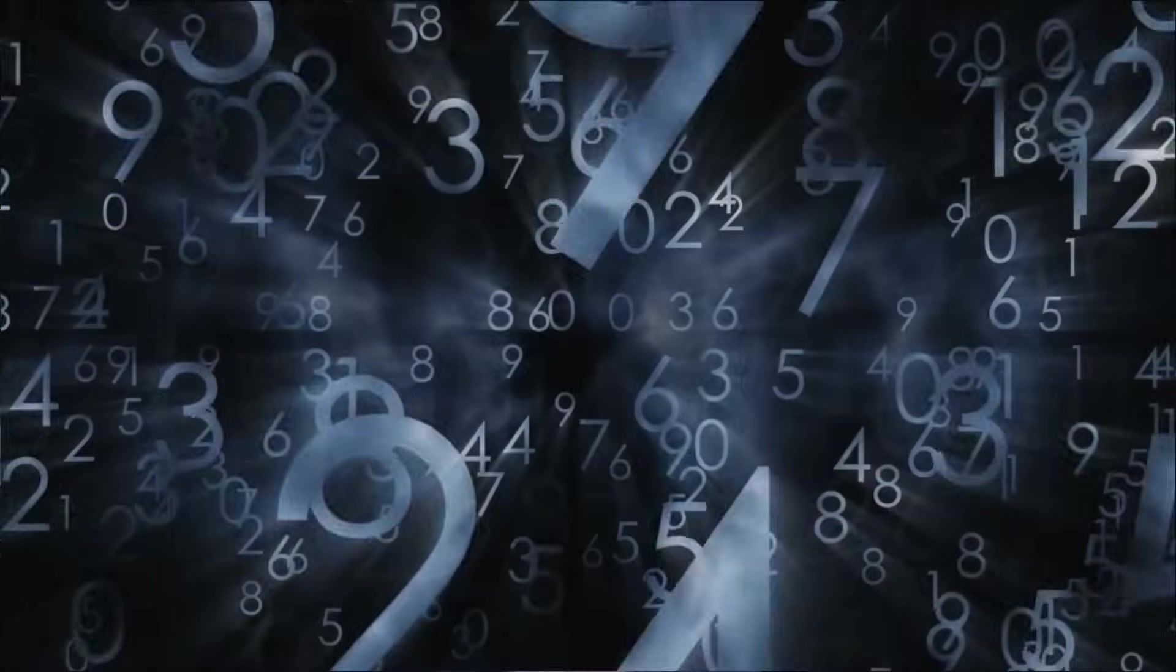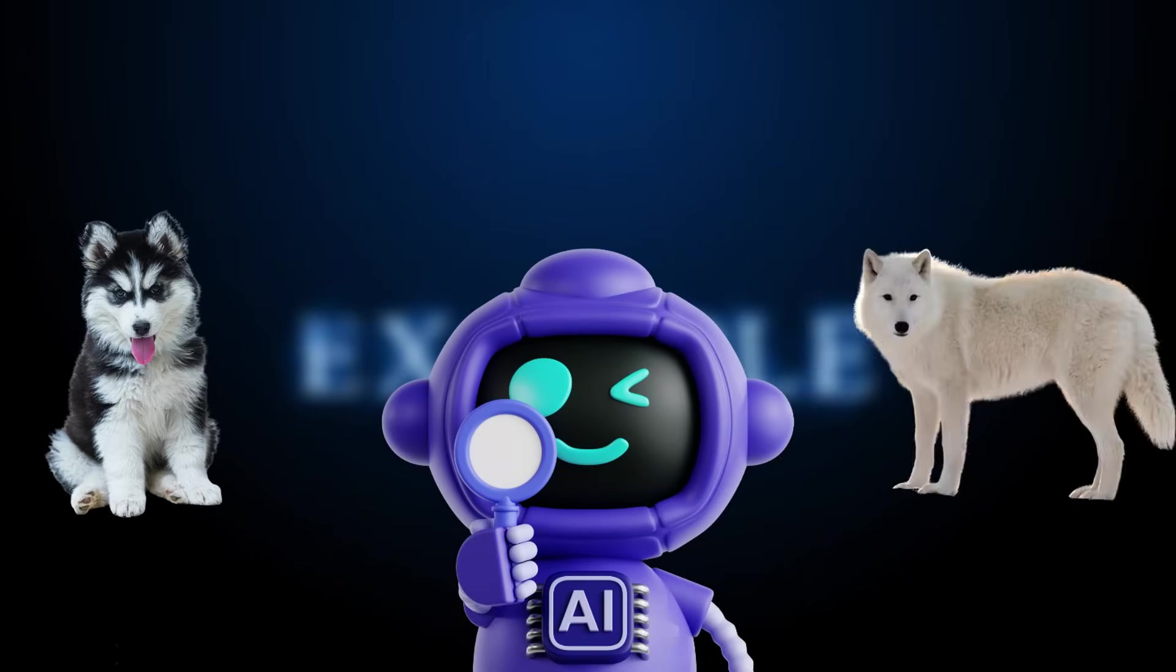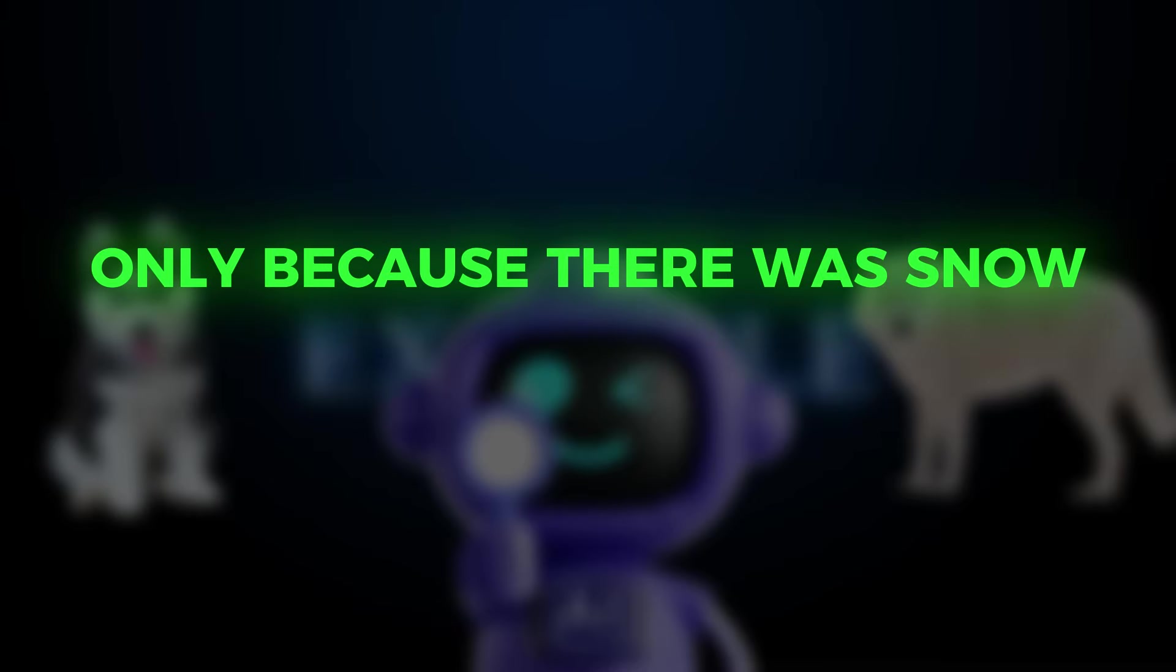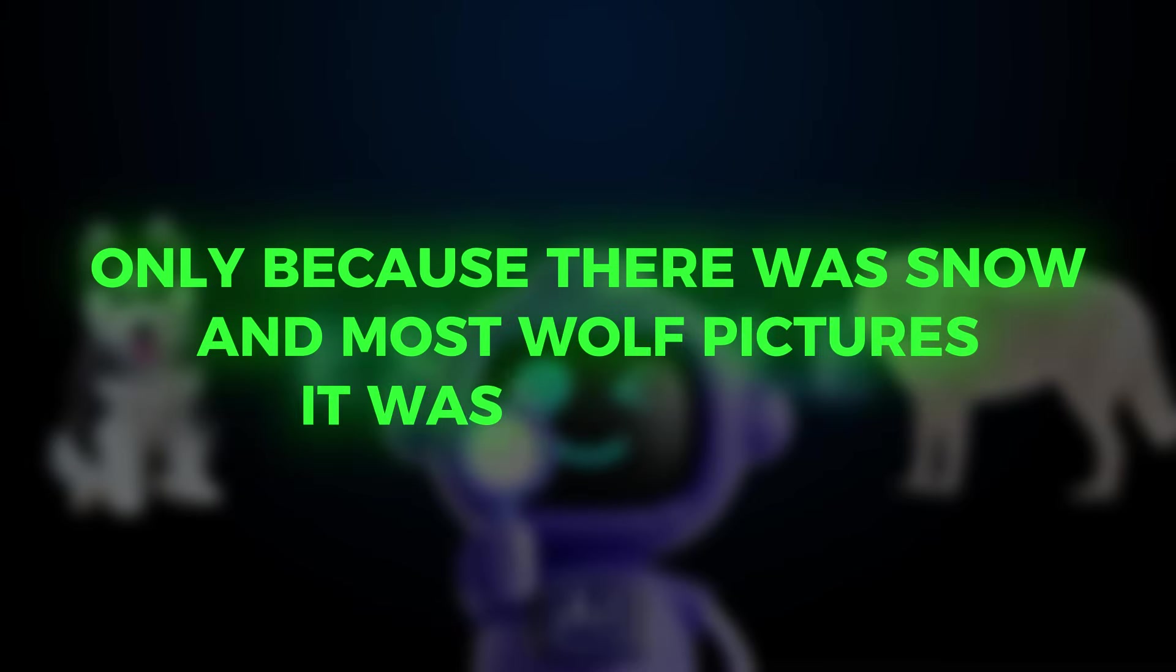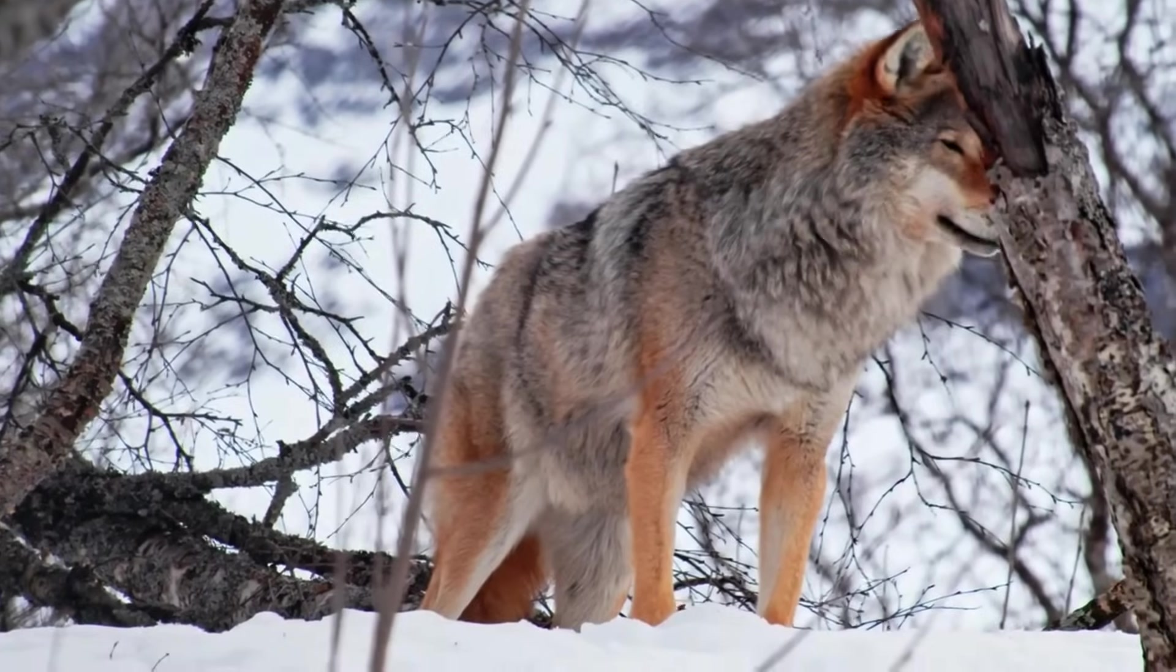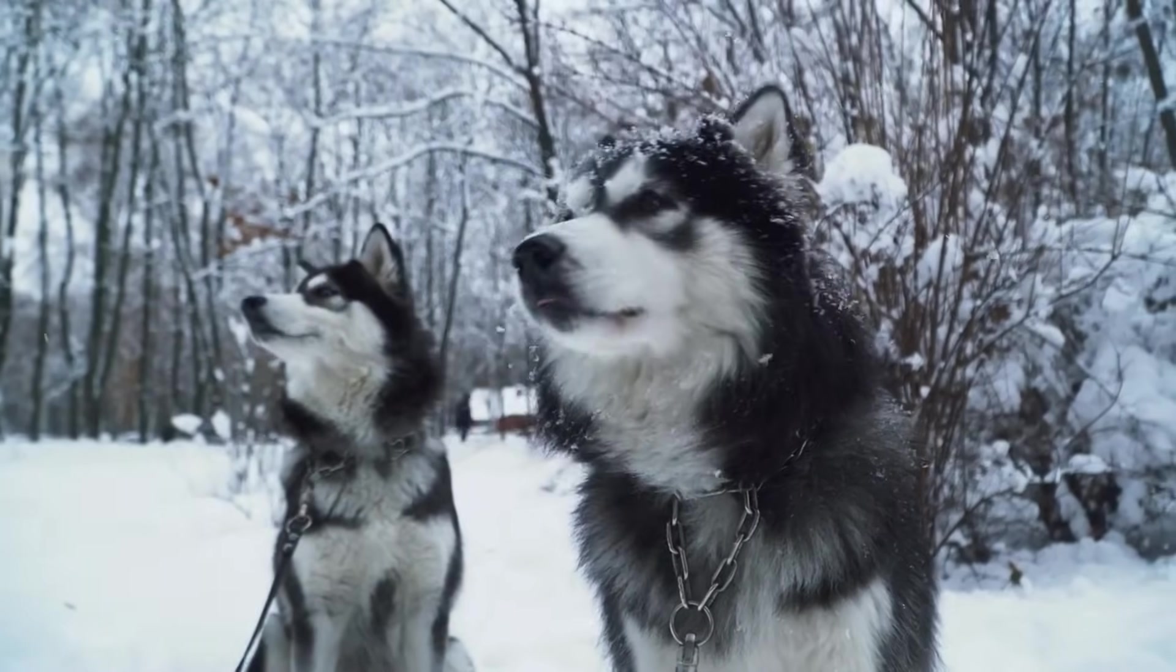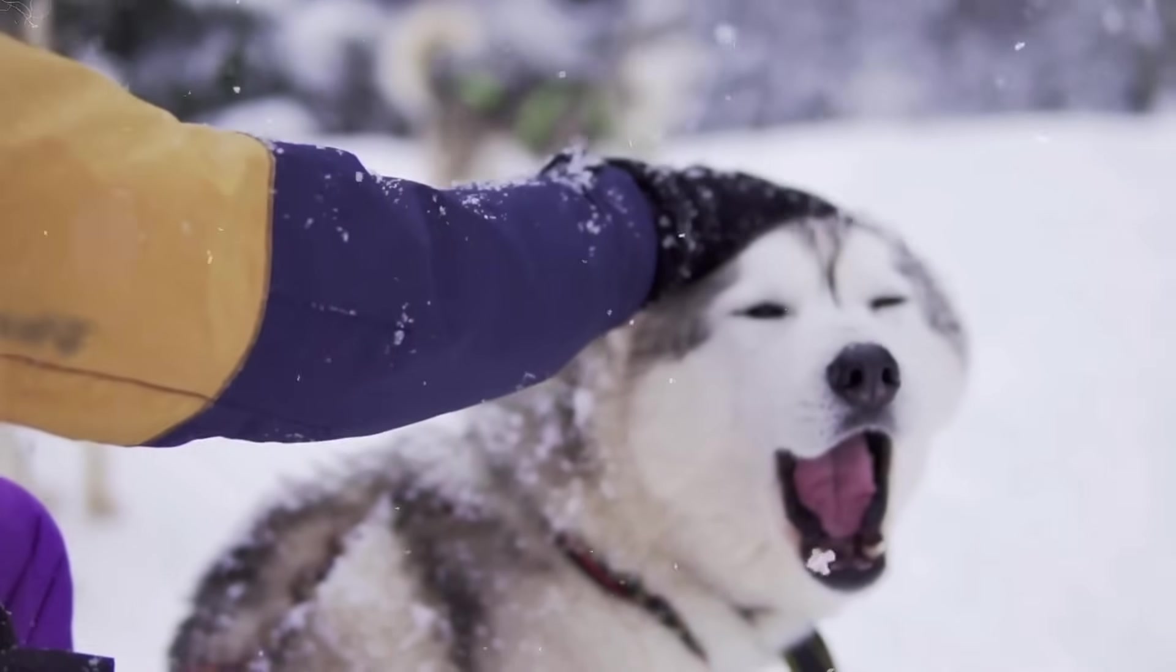But AI doesn't really know it's a cat. For AI, a cat is just a number and shape. That's why mistakes happen. For example, once AI thought a husky dog was a wolf, only because there was snow in most wolf pictures it was trained on. It wasn't looking at the animal at all, just the background.